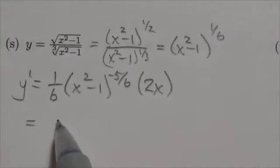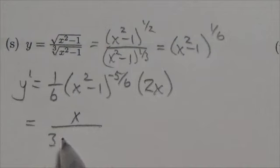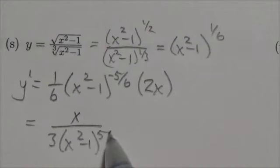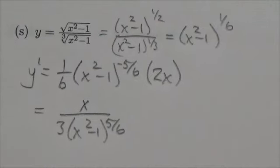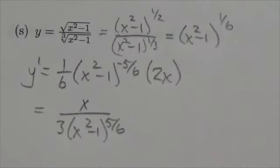And so now we're going to get that the answer to this is going to be x over 3 times x squared minus 1 to the 5 sixths. Now, I could have written that as a radical, but I honestly prefer working with the exponents.